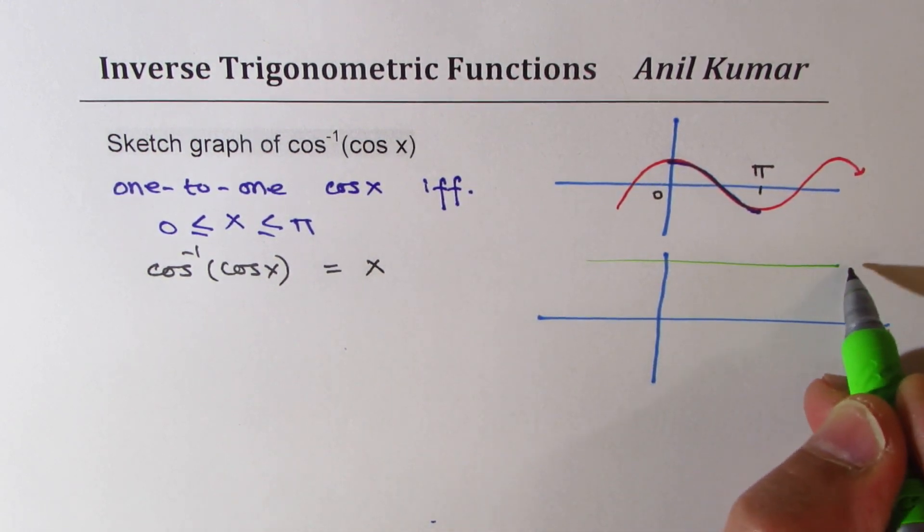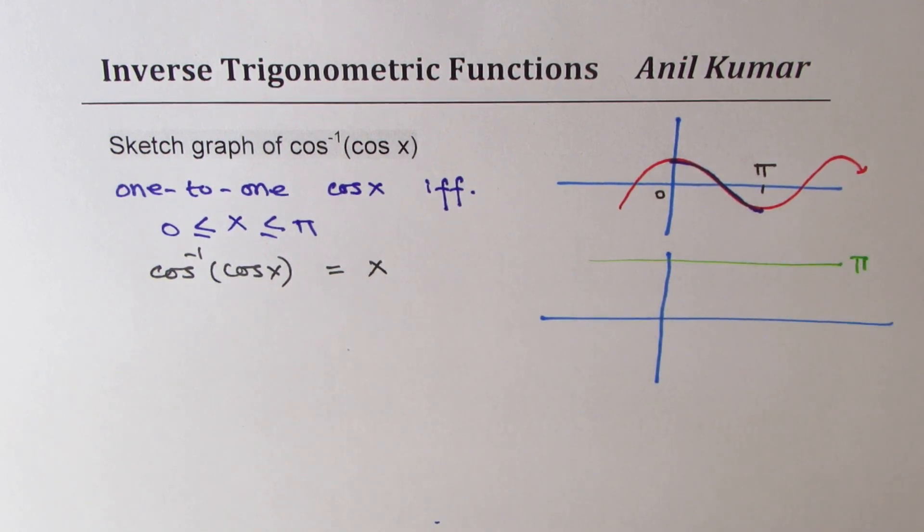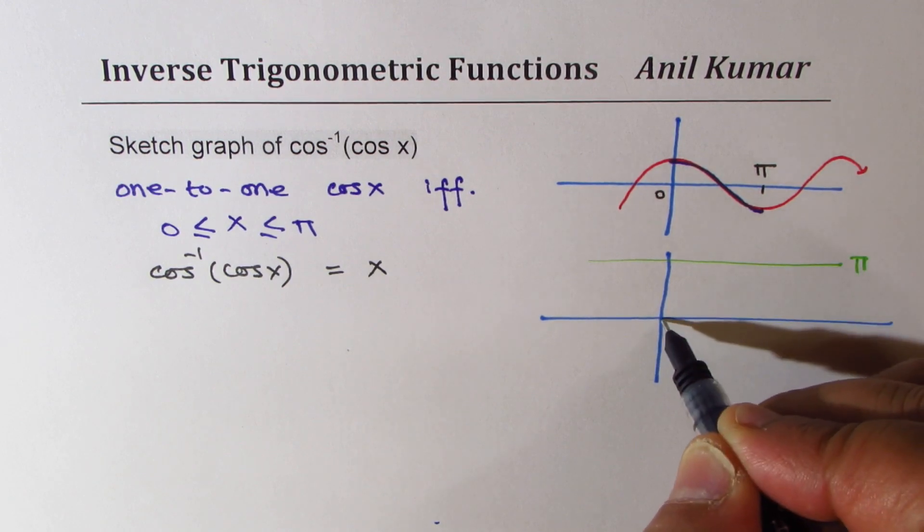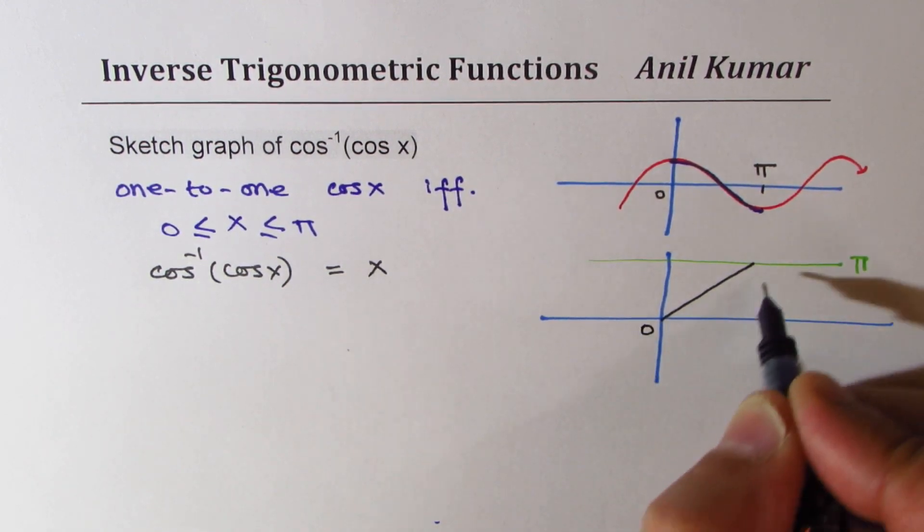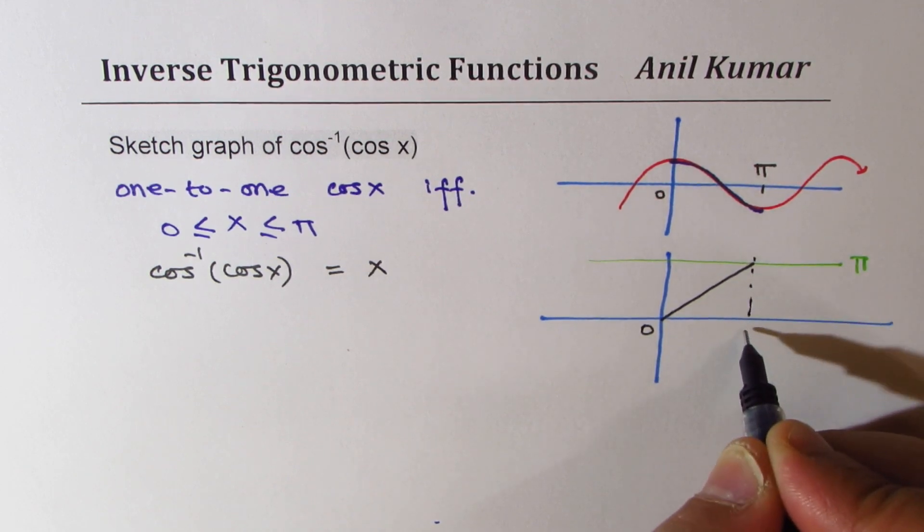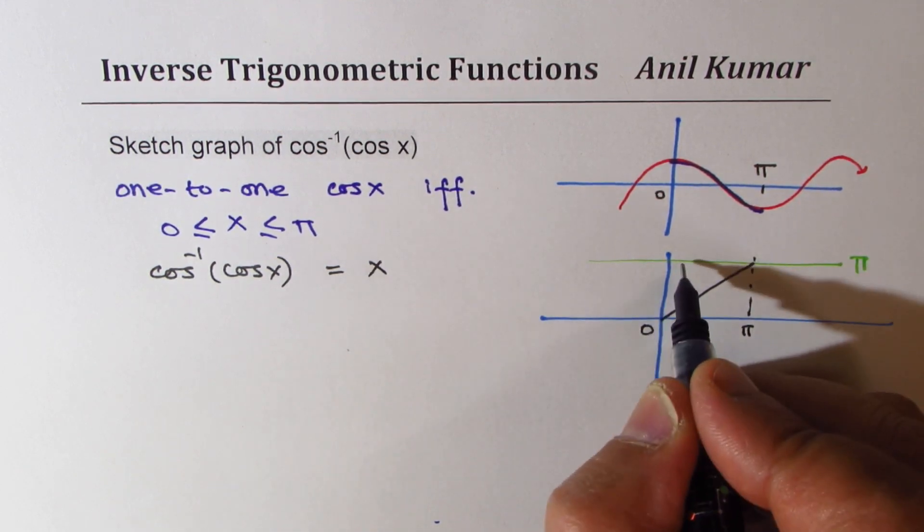Let's say this line represents pi for us. So, I could say that the graph of the function is kind of like this, from 0 to... at pi, it is pi.